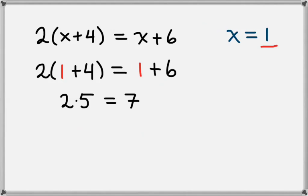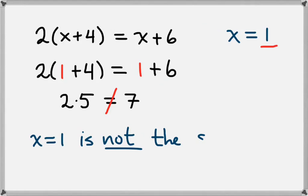Now, on the left-hand side, we have 2 times 5, which we know is 10. And on the right-hand side, we have 7. Those two sides of the equation are not equal. And so it turns out that x equals 1 is not a solution.